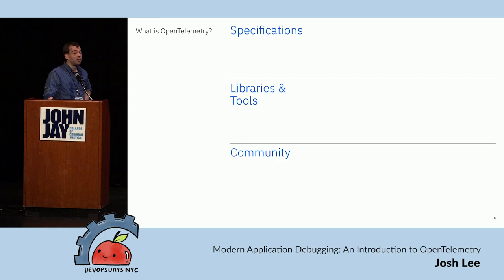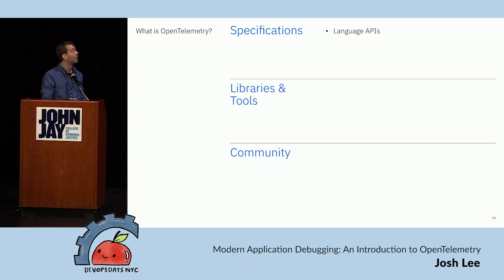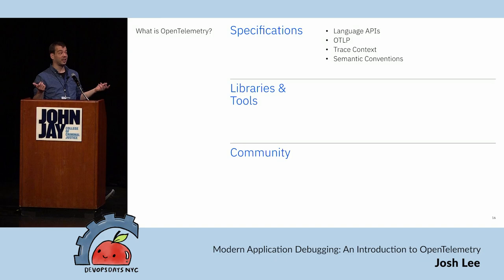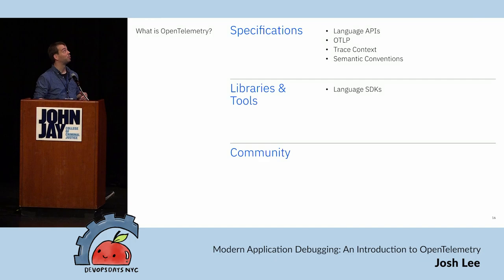It's more than just tools. The OpenTelemetry project at its heart provides important specifications: the language APIs, how we actually interact with the telemetry signals; OTLP, the format that telemetry signals get sent over the network; and trace context — this is a big one, it's how we propagate request IDs through our system so each service knows what came before it and can create the correct spans. And then there are the semantic conventions — naming things is one of the hardest things in software development, so semantic conventions give us a starting point for naming things interoperably and portably.